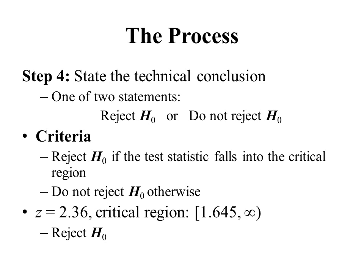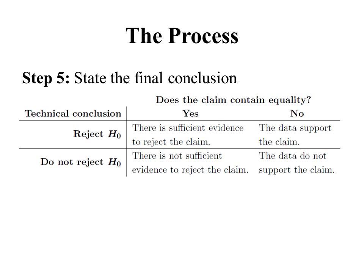This conclusion is called the technical conclusion because it doesn't mean much to anyone other than the person doing the analysis. So the last step is to state the final conclusion in non-technical terms. To come to the final conclusion, we look at two things: the technical conclusion (reject or do not reject the null hypothesis), and whether the original claim contains equality. If the original claim does contain equality, we use one set of final conclusion statements; if it does not contain equality, we use another.